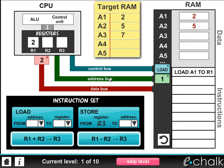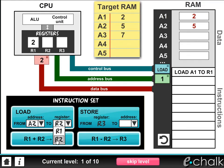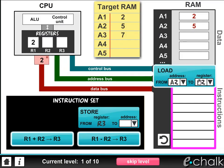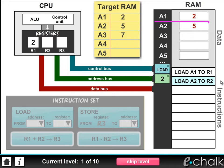Next, we want to issue another load instruction, but this time we want the data at address 2 to be loaded into register 2. Now we've made the instruction, we can drop it onto the instruction stack. So we're saying to load the data at address 2, which is the number 5, into register 2.